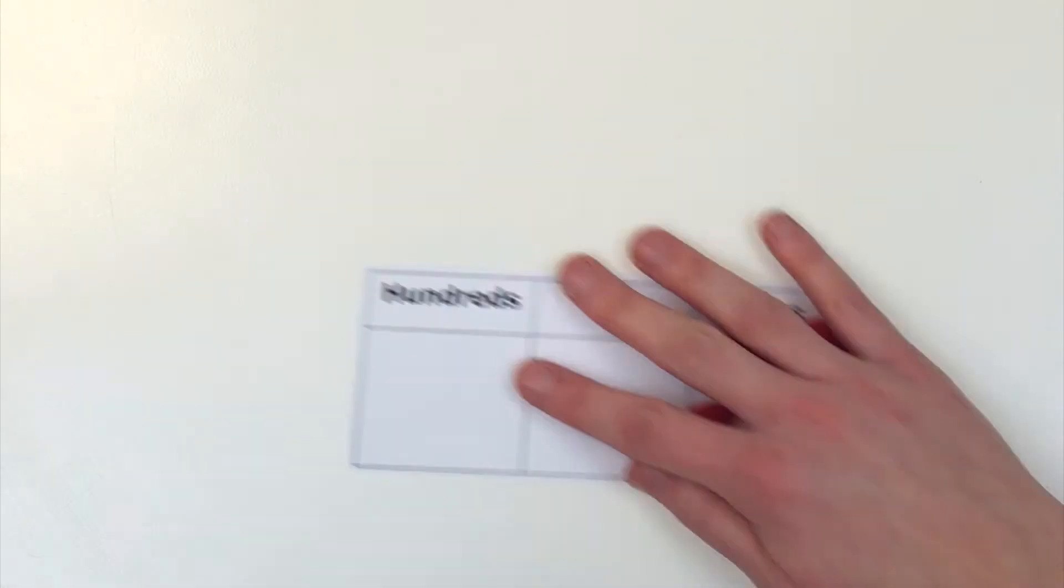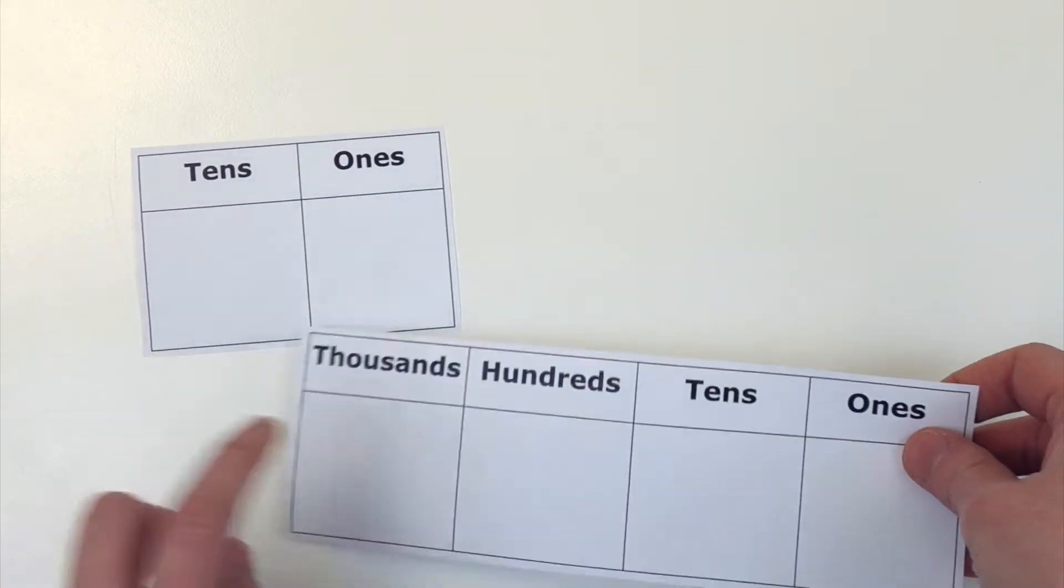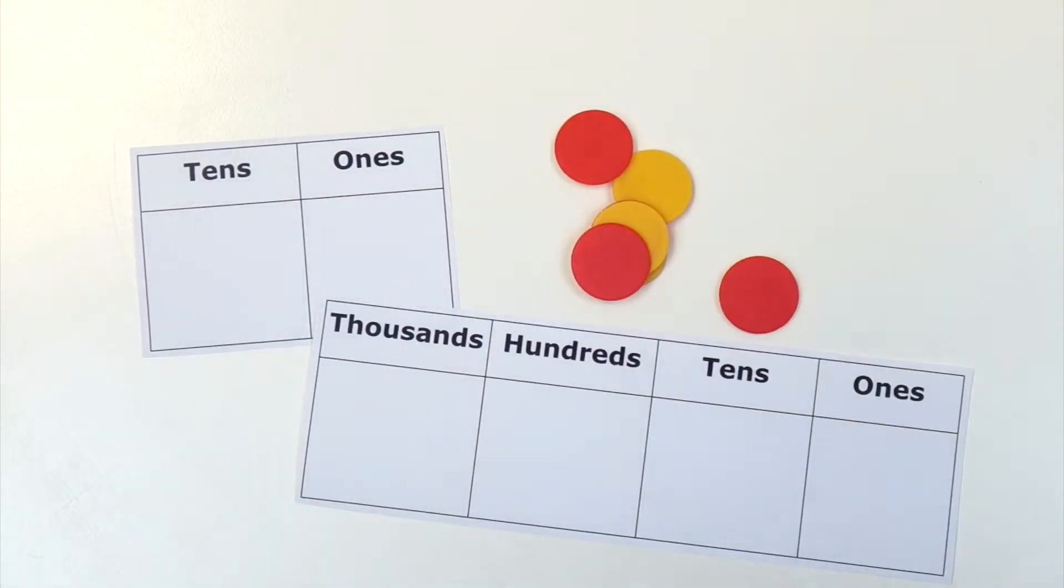Adapt the task by changing the number of places: only tens and ones, or include thousands, or change the number of counters.